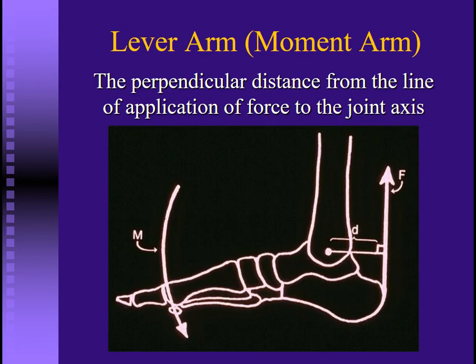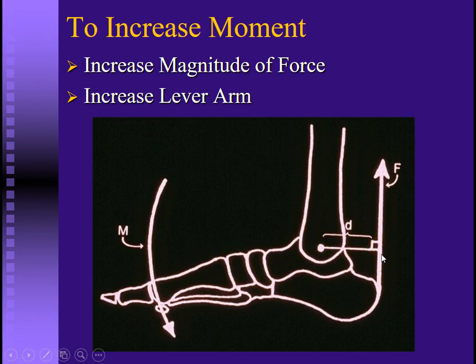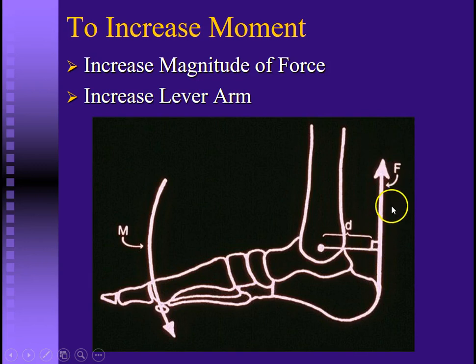The lever arm is the perpendicular distance from the line of application of force to a joint axis. Taking the ankle joint as an example, the point of application of force is at the Achilles, and the lever arm is the distance from the ankle joint over to the Achilles tendon. To increase the moment around the joint, you either have to increase the magnitude by pulling or pushing harder, or you have to increase the lever arm.